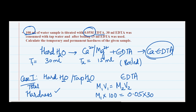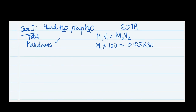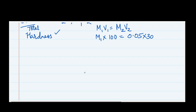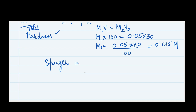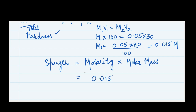Please do the numerical along with me. M1 = (0.05 × 30) / 100, which gives 0.015 mol per liter — we'll treat this as molarity. Now, to find the total hardness as a strength value, we multiply the molarity by the molar mass. Since molarity is given, we multiply by molar mass rather than equivalent weight.